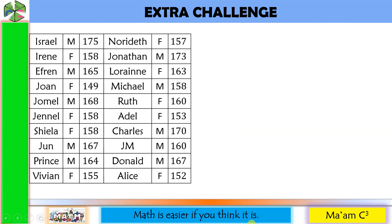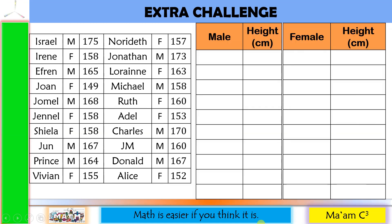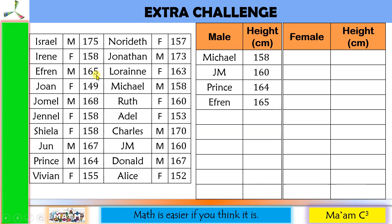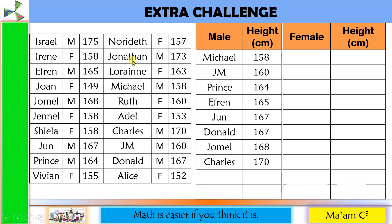The first thing we have to do is separate the data of males and females. Then arrange the heights in ascending order. Starting with the males — the shortest is Michael at 158 cm, then JM at 160, Prince at 164, Ephraim at 165, June at 167, Donald also at 167, Jomel at 168, Charles at 170, Jonathan at 173, and Israel at 175.